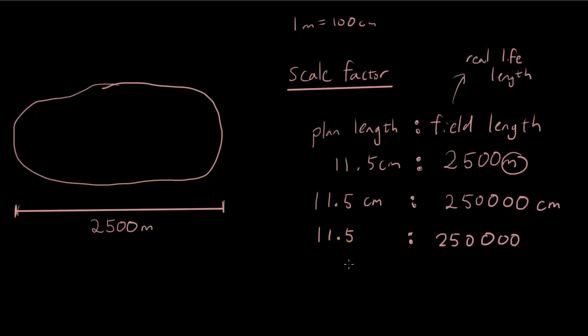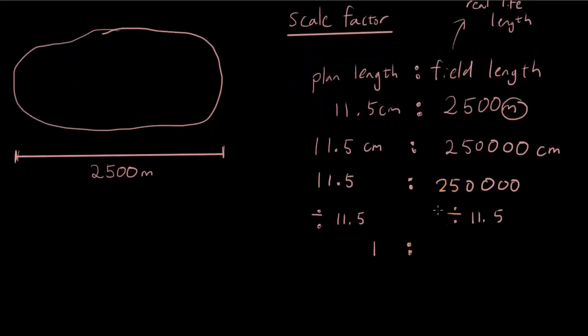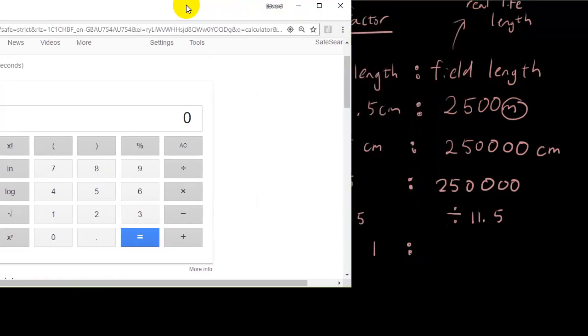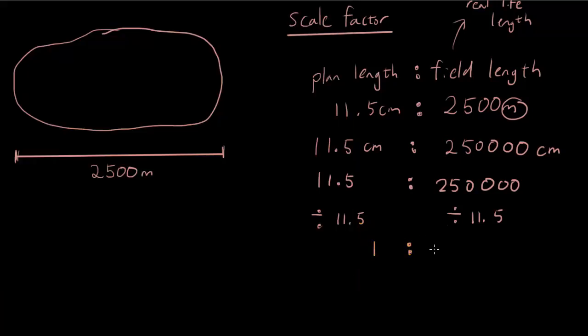So on the left hand side to go down to 1, what I need to do is I need to divide both sides by 11.5. Divide both sides by 11.5 and then I will have 1 to, and then I just put that into the calculator. So I put in the calculator, 250,000 divided by 11.5 and I have 21,739.